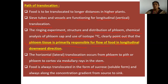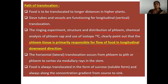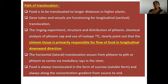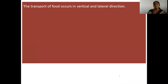Food is always translocated in the form of sucrose, that is in soluble form, and always along the concentration gradient from source to sink — that is from higher concentration to lower concentration. The source has high concentration and the sink has low concentration. The transport of food occurs in both vertical and lateral directions.